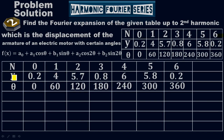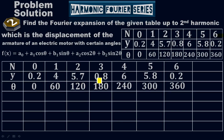Y is the displacement of the armature of an electric motor, and theta represents the certain angles. At zero degrees, the displacement is 0.2. At 60°, it is 4. At 120°, it is 5.7. At 180°, it is 0.8. At 240°, it is 6. At 300°, it is 5.8. At 360°, it is 0.2.